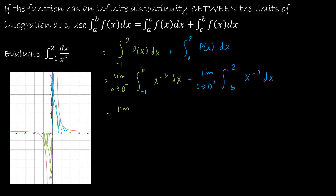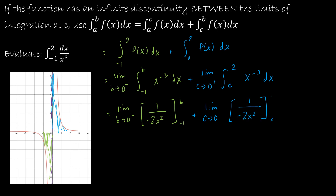For the first part: the limit as B approaches 0 from the left — the antiderivative of x to the negative 3 is x to the negative 2 divided by negative 2, or 1 over negative 2x squared — evaluated from negative 1 to B. The same antiderivative applies to the second part: the limit as C approaches 0 from the right of 1 over negative 2x squared from C to 2. Applying the fundamental theorem gives: the limit as B approaches 0 from the left of 1 over (negative 2B squared) minus 1 over (negative 2 times negative 1 squared).